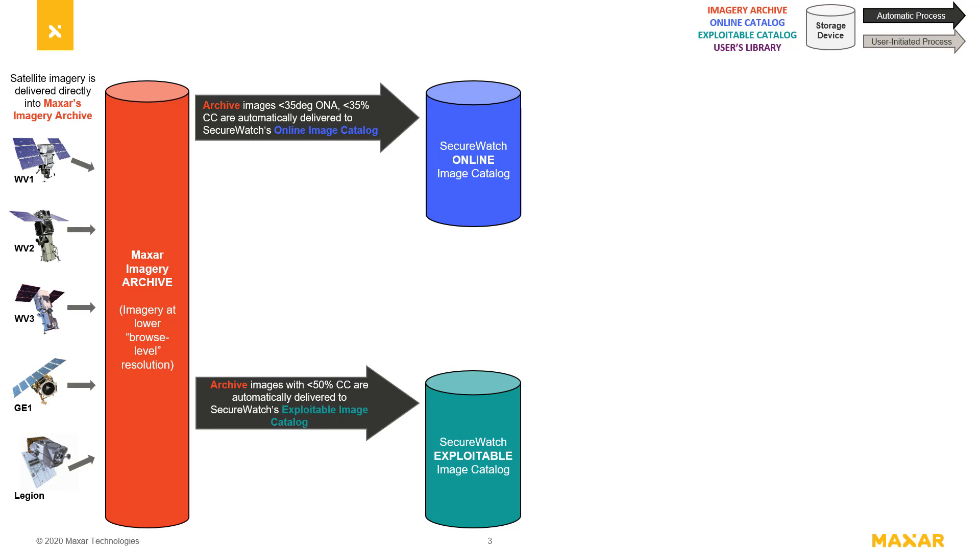If you want to view an image in full resolution that was not automatically delivered to a SecureWatch image catalog, no problem. You can simply order it directly to the online image catalog or request to exploit the image, in which case it will be sent to the exploitable image catalog.